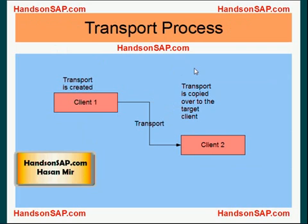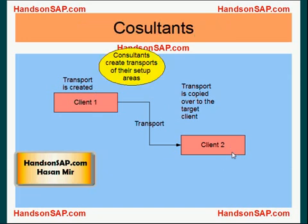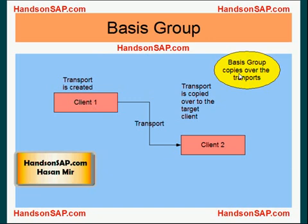This is how the transport process looks. Client 1 is the source client and Client 2 is the target client. A transport is created in Client 1 by consultants, each creating transports for their own setup area. The transport is then copied over to Client 2 so that the same changes happen there as well.